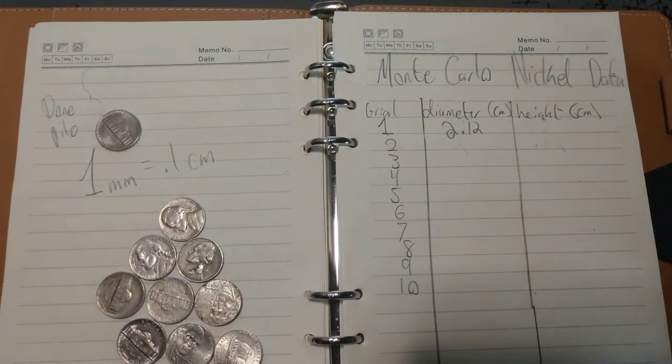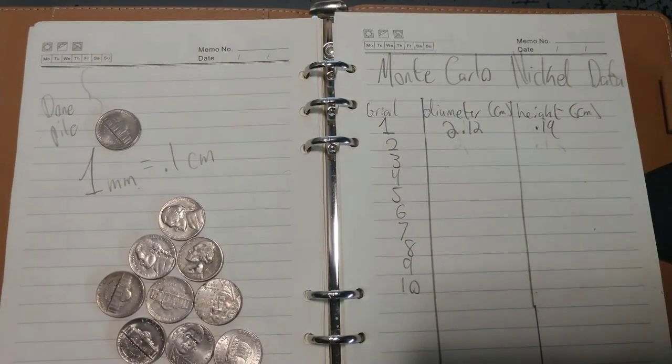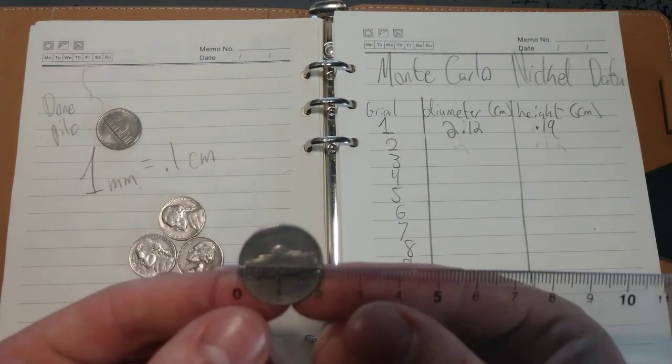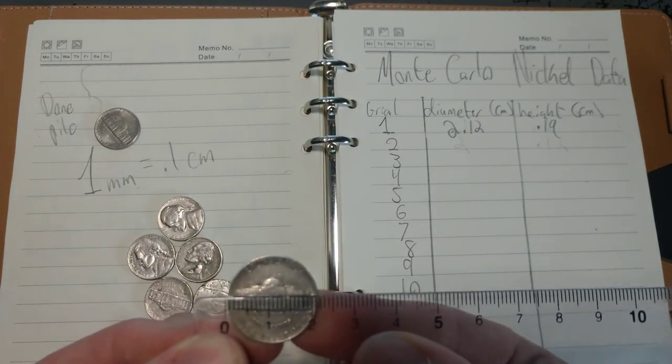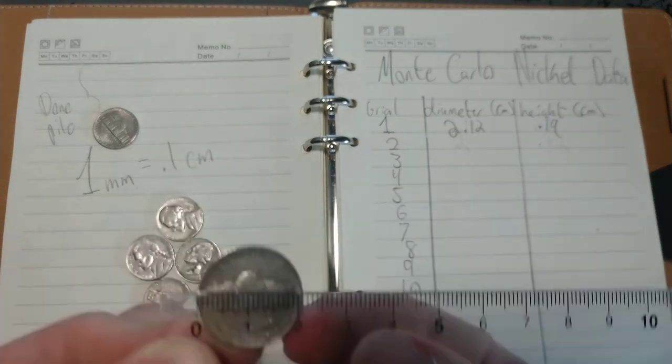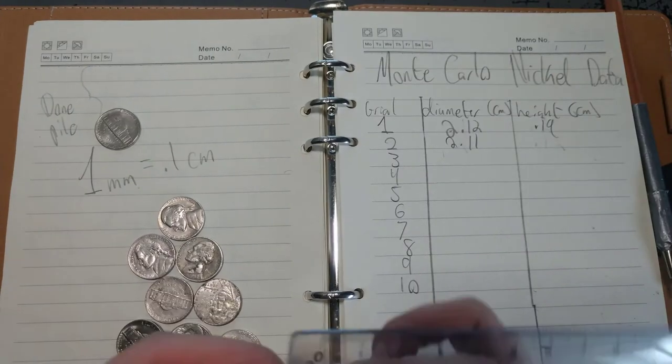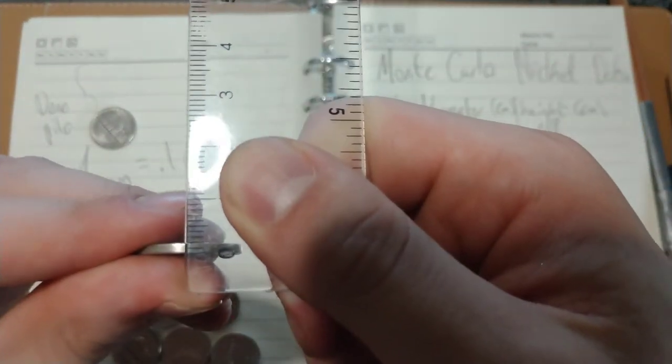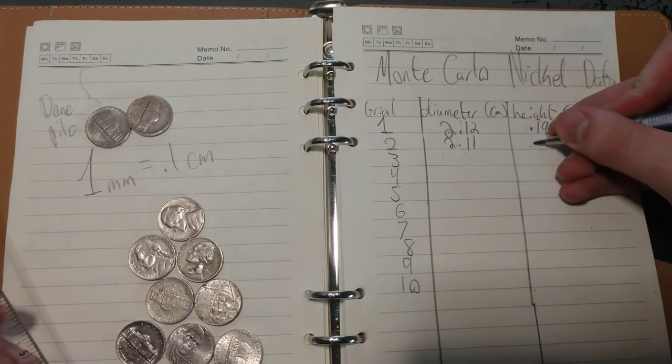And that'll go in the done pile. Awesome. From here, we can measure the rest of our 10 nickels. We'll get their diameters and heights, and our data table will be full. Then we'll be able to move on to our statistical analysis. This concludes this video.